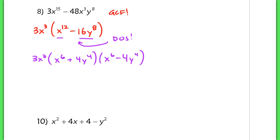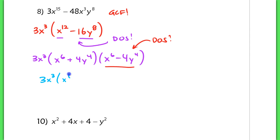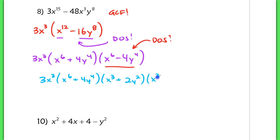I also recognize this term here as another difference of squares, so I have to keep going even further. My final answer should be 3x cubed times x to the 6th plus 4y to the 4th, times x to the 3rd plus 2y squared, times x to the 3rd minus 2y squared.